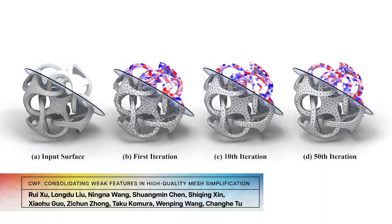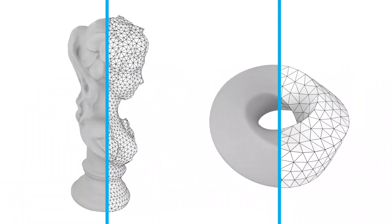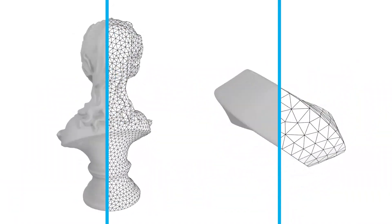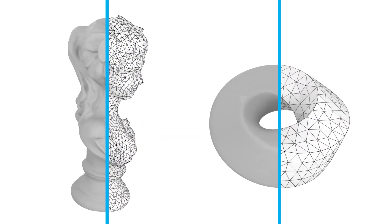This new mesh simplification algorithm balances accuracy, triangle quality, and feature alignment with a unified smooth functional.